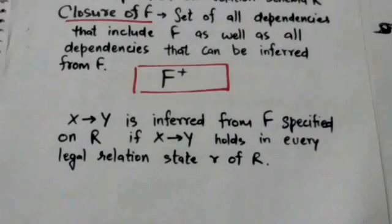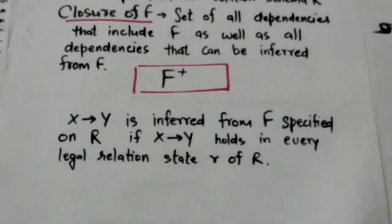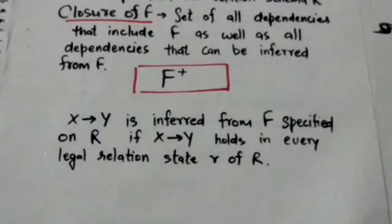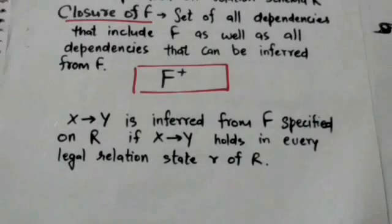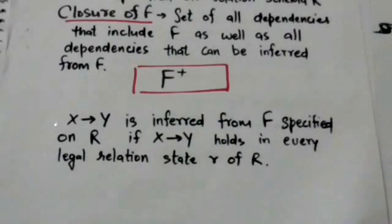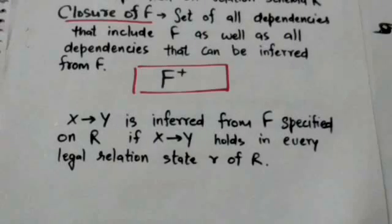A functional dependency from X to Y is inferred from a set of dependencies F specified on relation schema R if the functional dependency from X to Y holds in every legal relation state r of R. That is, whenever relation state r satisfies all the dependencies in F, then the functional dependency from X to Y also holds in r.